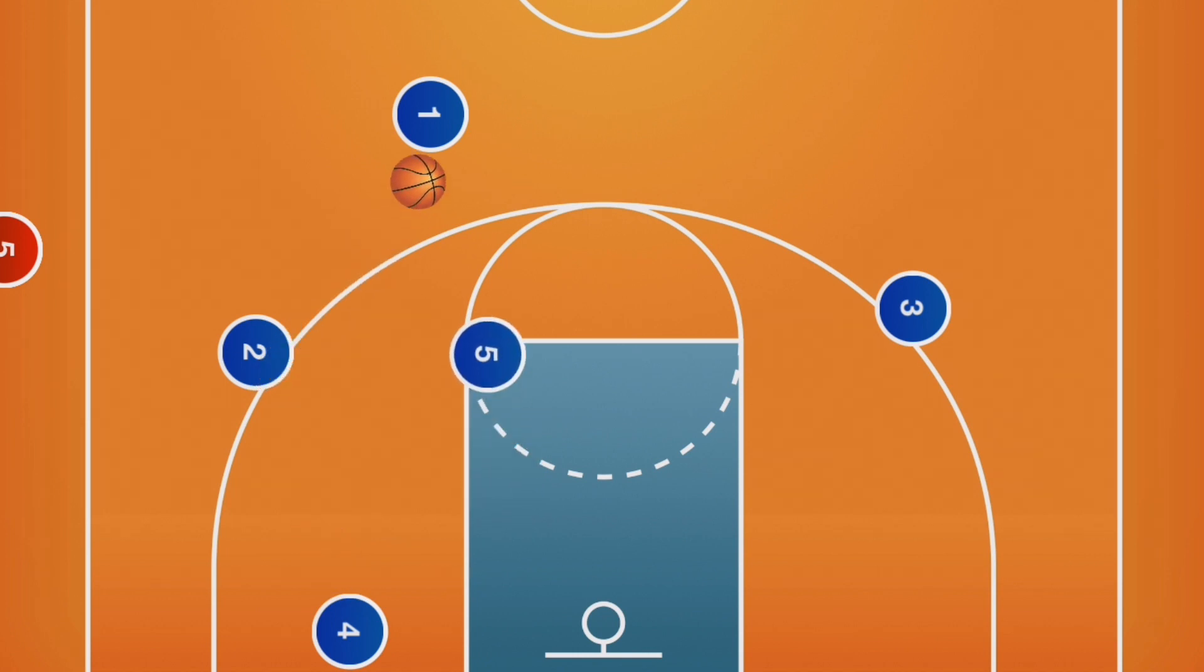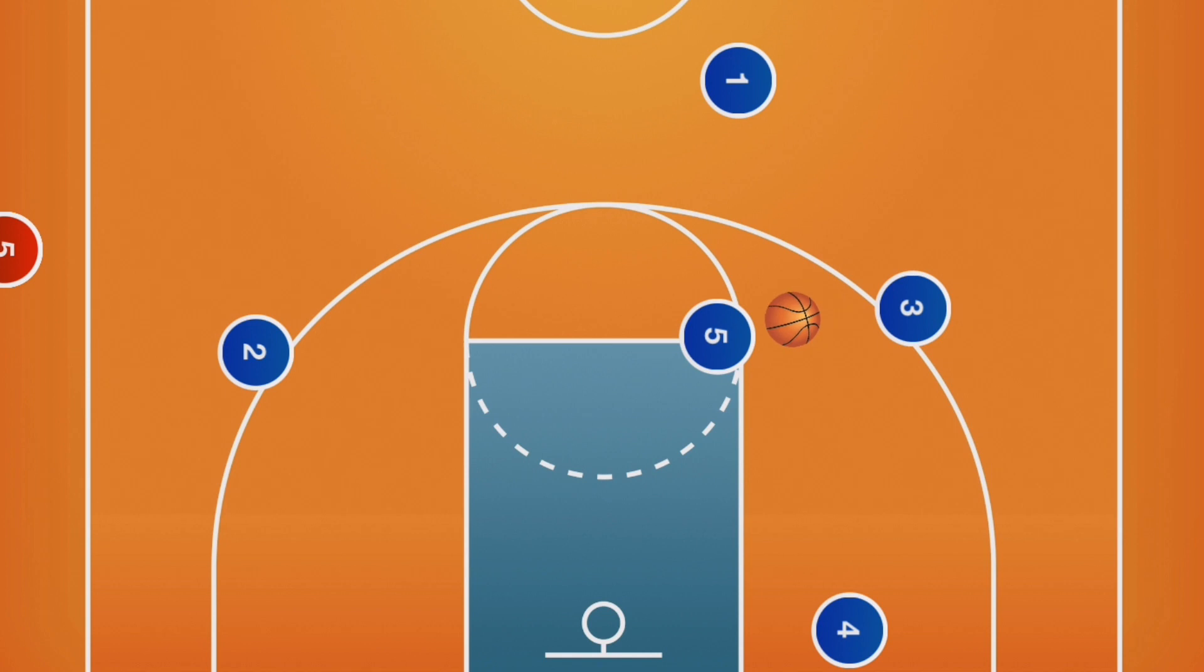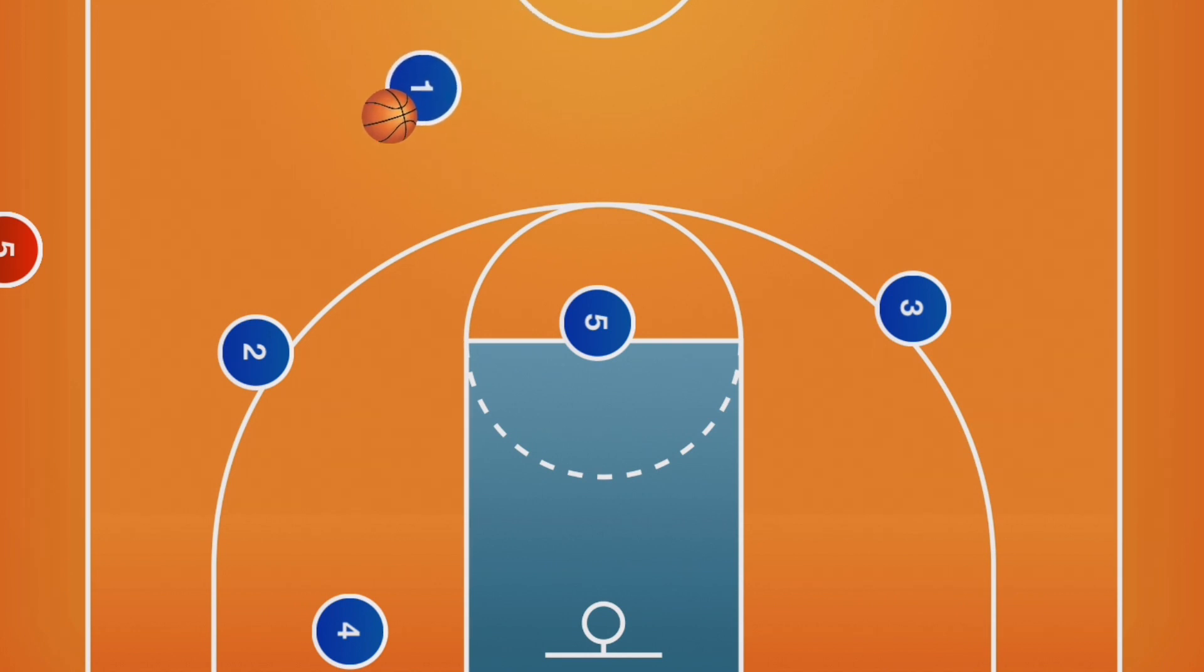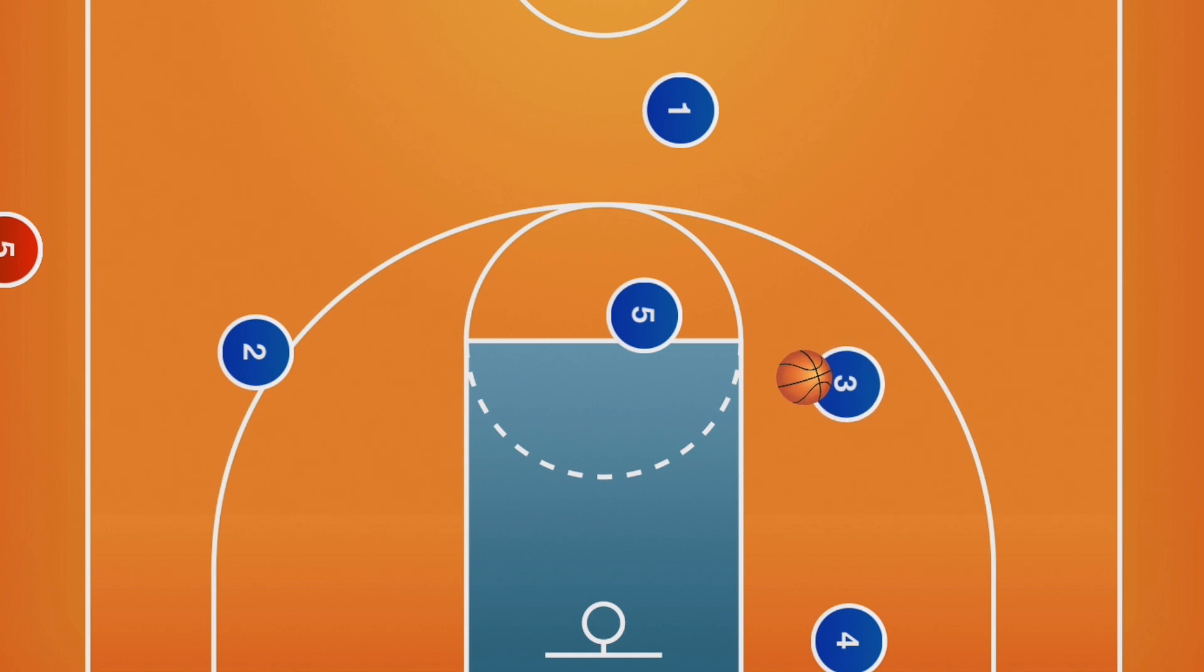Pro tip: I sell lies. Use ball fakes and head fakes to mislead the defenders. At any point, players may penetrate or use their dribble to attack the center of the floor. We want to keep random dribbling to a minimum. Dribble with the purpose to score or set your teammate up for a better shot or pass.